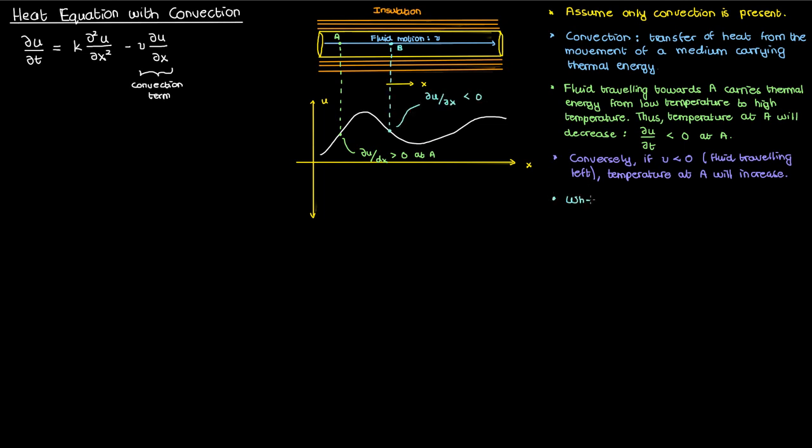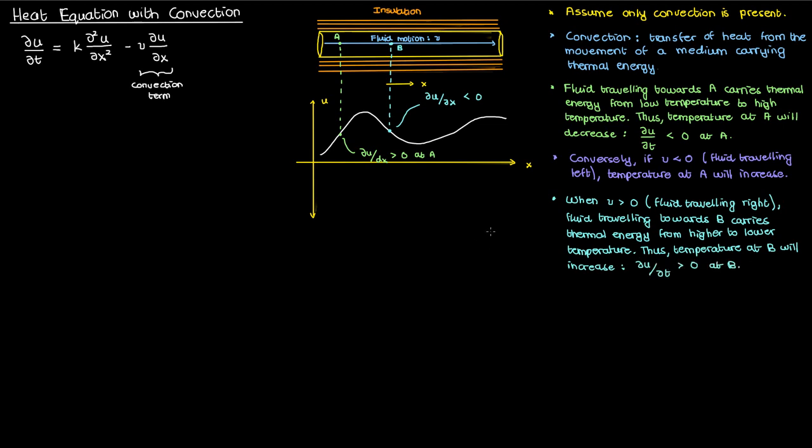If my medium is traveling towards the right, so v is positive, it's carrying thermal energy from an area of higher temperature to an area of lower temperature. As a result the temperature at this point B will tend to increase because it has warmer fluid coming towards it.